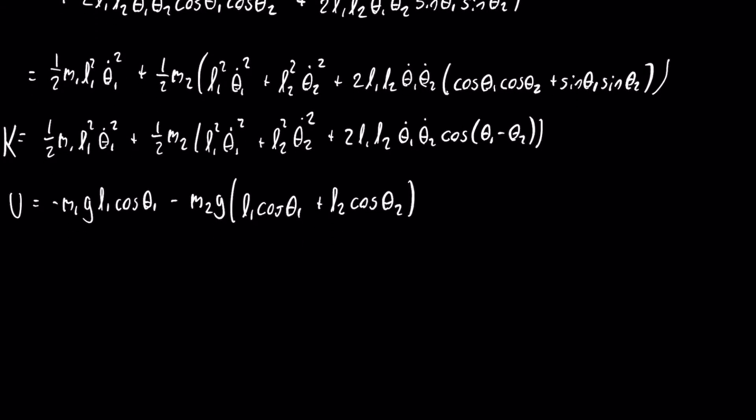We have the kinetic energy. We have the potential energy. That's all we need to form the Lagrangian. The Lagrangian, again, is the difference between the kinetic and potential energies.